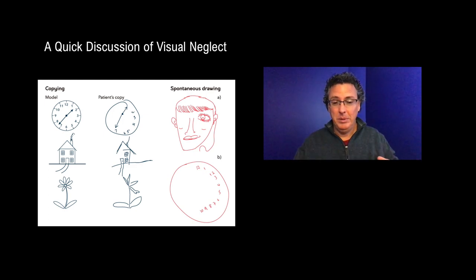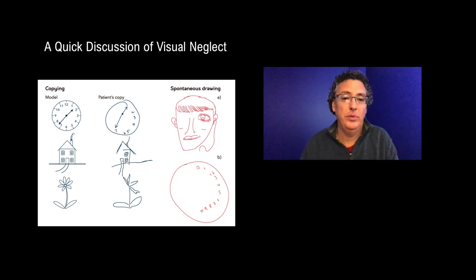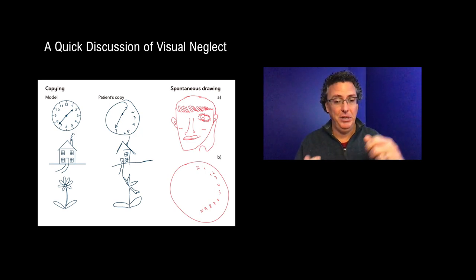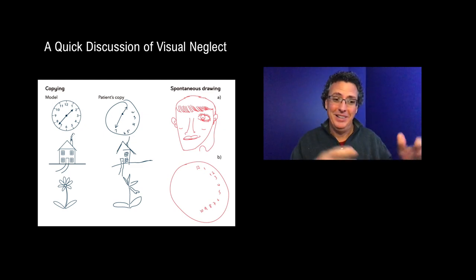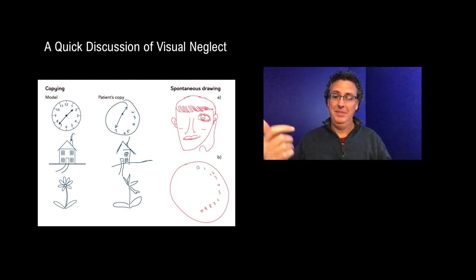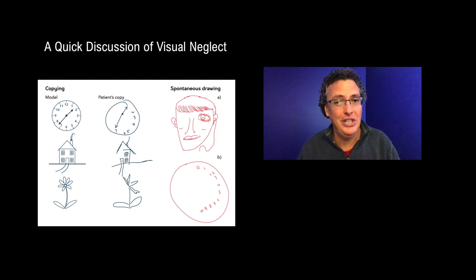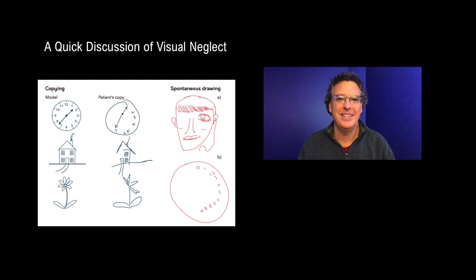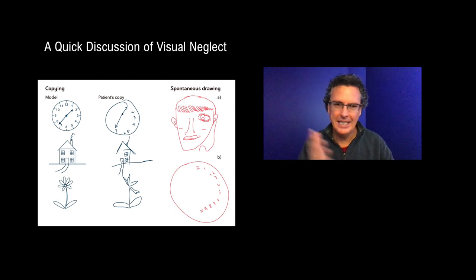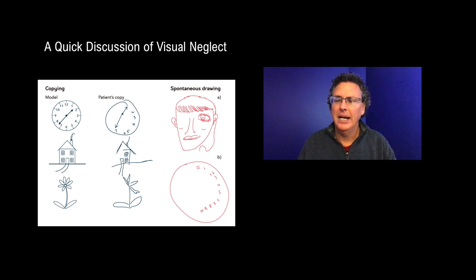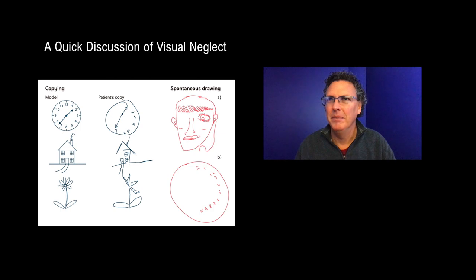If attention doesn't go somewhere, consciousness doesn't go there either. There are strange behaviors like giving them a plate of food — they'll eat everything on the right, then put down their fork and knife as if done. But if you spin the plate so the leftover food is now on the right, suddenly they see it and eat it. This is a disorder of attention — getting attention to the left side of space seems to be the problem.